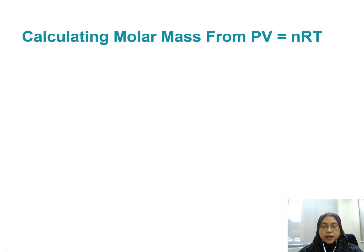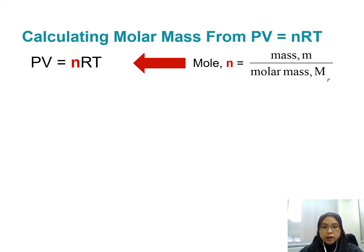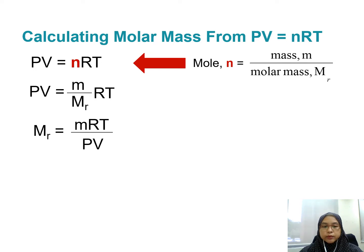Molar mass and density can also be calculated using PV equals to nRT. From PV equals to nRT, we substitute the number of mol n with mass over molar mass, M over Mr. We get PV equals to M over Mr times RT. Rearranging gives us Mr equals to MRT over PV, so we can use this equation to find the molar mass of a gas.